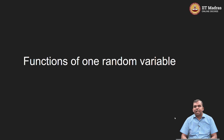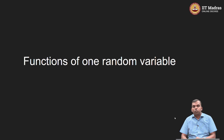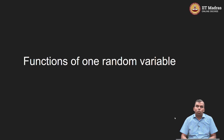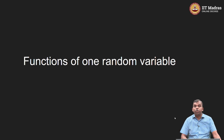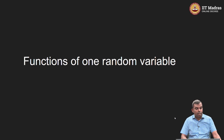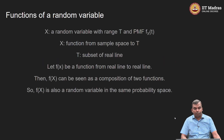You have a discrete random variable and then I look at a function of it. How do you deal with that scenario? What is that object — a function of a discrete random variable? What kind of an object is it and how do you deal with it? That is the objective of this lecture. It is a relatively short lecture. Let us get into it.